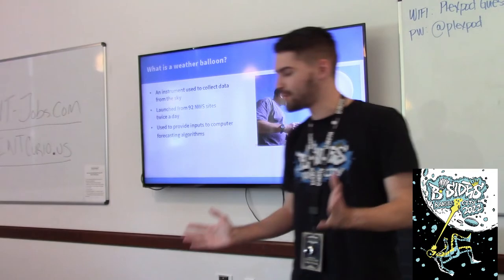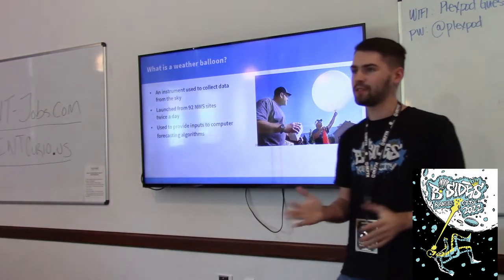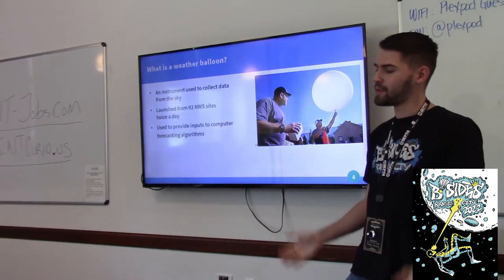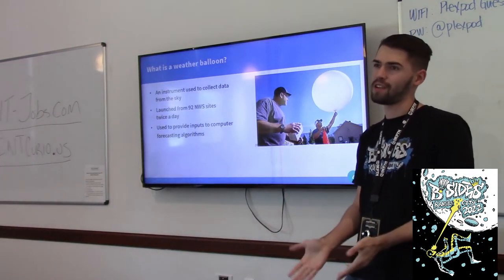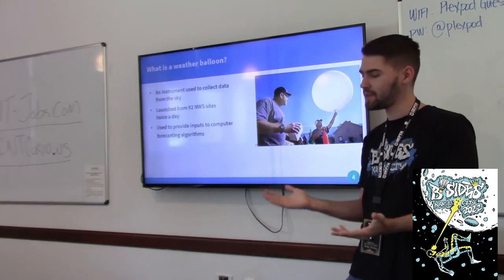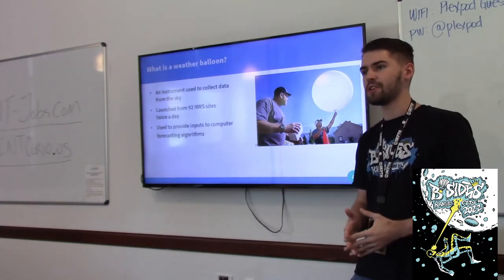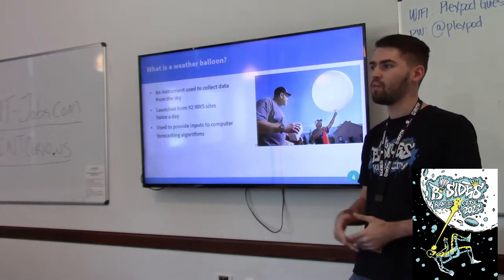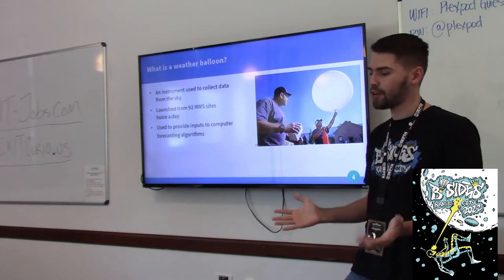So what is a weather balloon? A weather balloon is used to collect measurements from the ground to near space, and includes temperature, humidity, wind, and sometimes pressure.